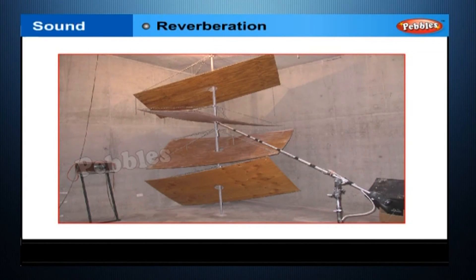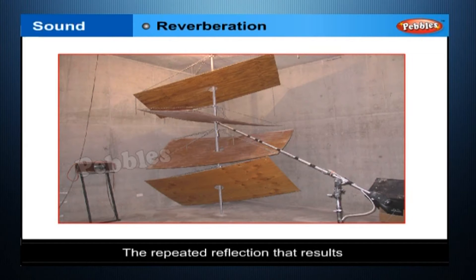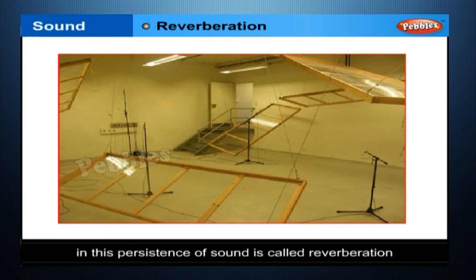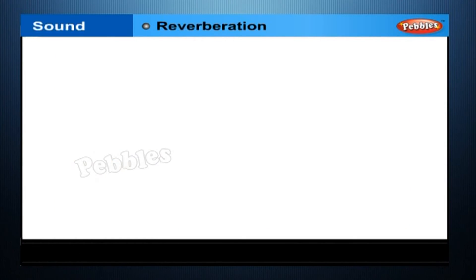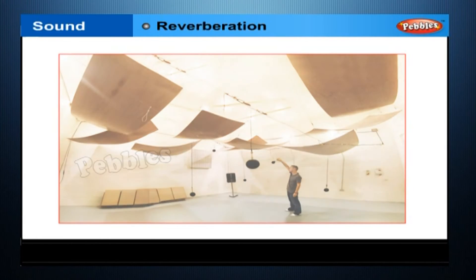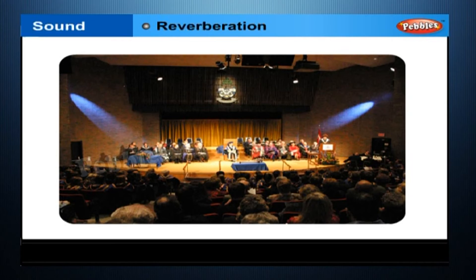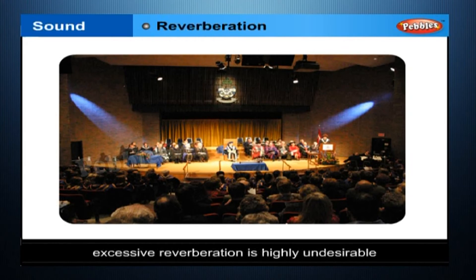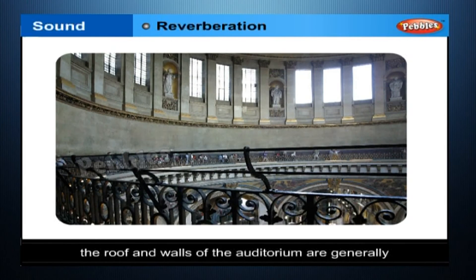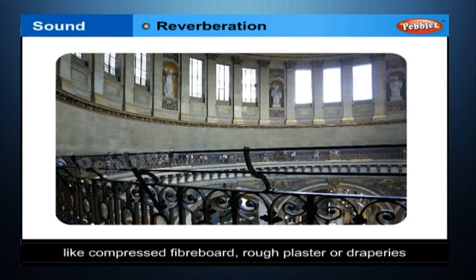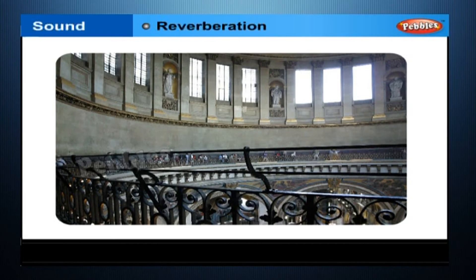Reverberation. A sound created in a big hall will persist by repeated reflection from the walls until it is reduced to a value where it is no longer audible. The repeated reflection that results in this persistence of sound is called reverberation. In an auditorium or big hall, excessive reverberation is highly undesirable. To reduce reverberation, the roof and walls of the auditorium are generally covered with sound absorbent materials like compressed fireboard, rough plaster, or draperies. The seat materials are also selected on the basis of their sound absorbing properties.